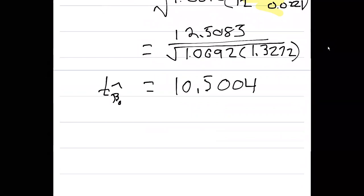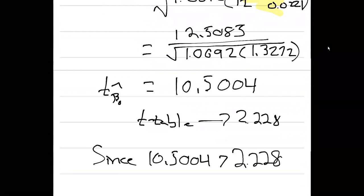Again, we're comparing to that same value from the t table we found, that was 2.228. We can say, just like with the slope, since 10.5004 is greater than 2.228, we reject the null hypothesis.